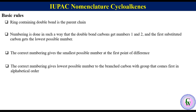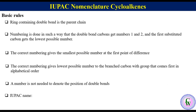A number is not needed to denote the position of the double bond. IUPAC nomenclature contains four main parts in the order: substituents, prefix cyclo, parent chain, and -ene.